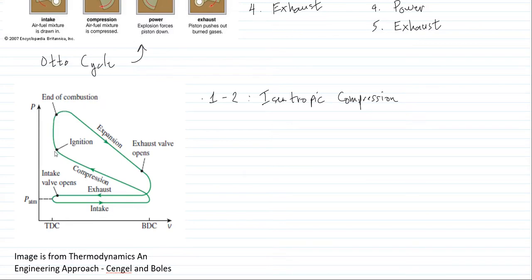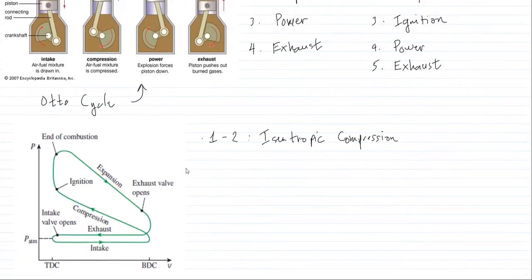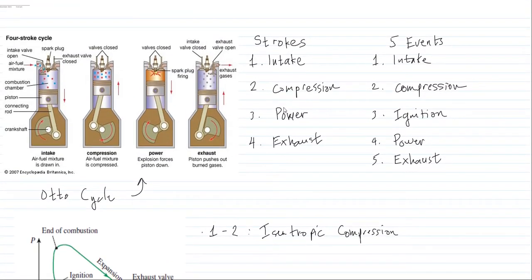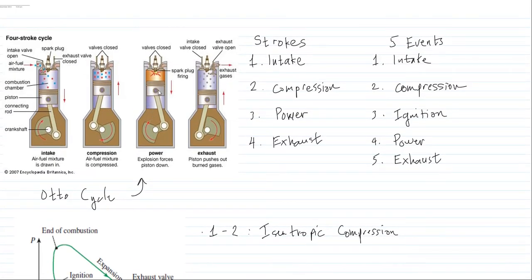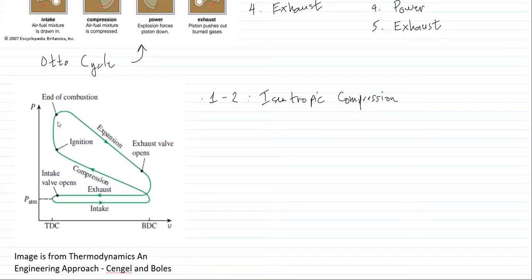The next process, after the intake stroke and compression stroke, is the power stroke. In the power stroke, you have compressed the gas and the spark plug has provided the spark so that the fuel and air mixture will explode. This is that portion of the graph, and we will call it points 2 to 3.